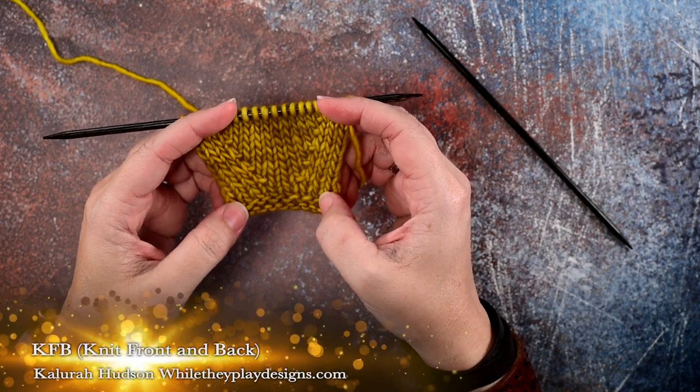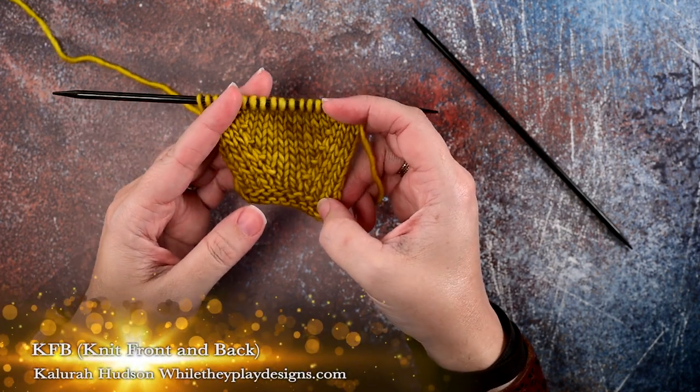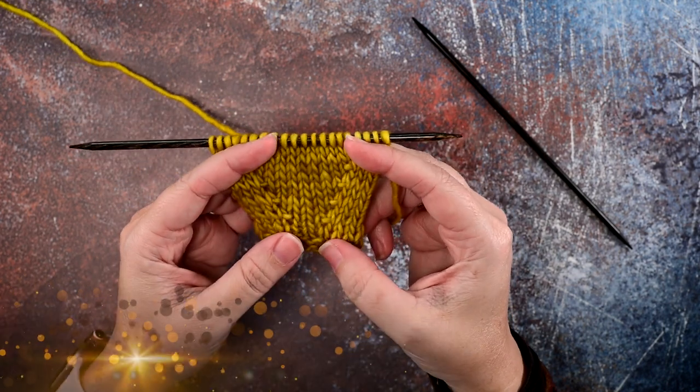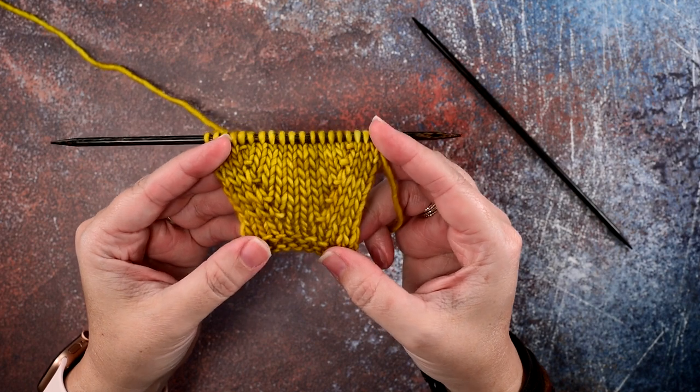Hi guys, this is Clara Hudson of While They Play Designs. In today's video, I'm going to show you how to do a knit front and back, or KFB, which is a one stitch increase.